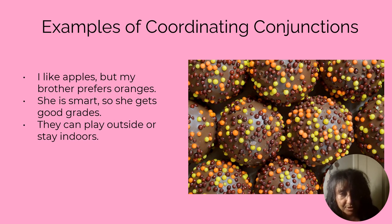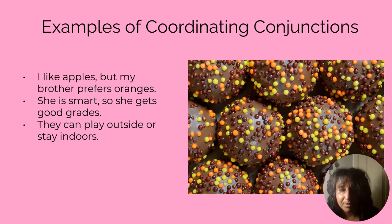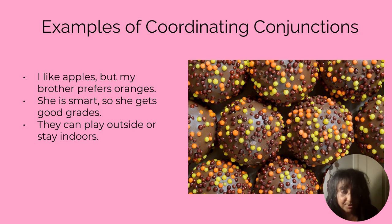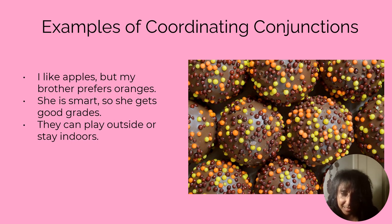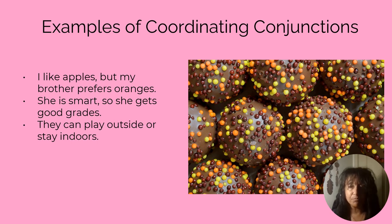I like apples but my brother prefers oranges. As you can see, you could make two separate sentences: 'I like apples.' 'My brother prefers oranges.' Here's another example: 'She is smart so she gets good grades.' You could have two separate sentences there, but using these coordinating conjunctions allows for the story to move in a more seamless manner.